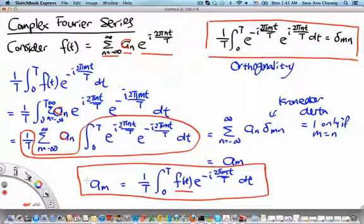This is c_n and this is c_n. We will reserve a and b to denote the coefficients of the real Fourier series and c to denote the coefficients of the complex Fourier series.